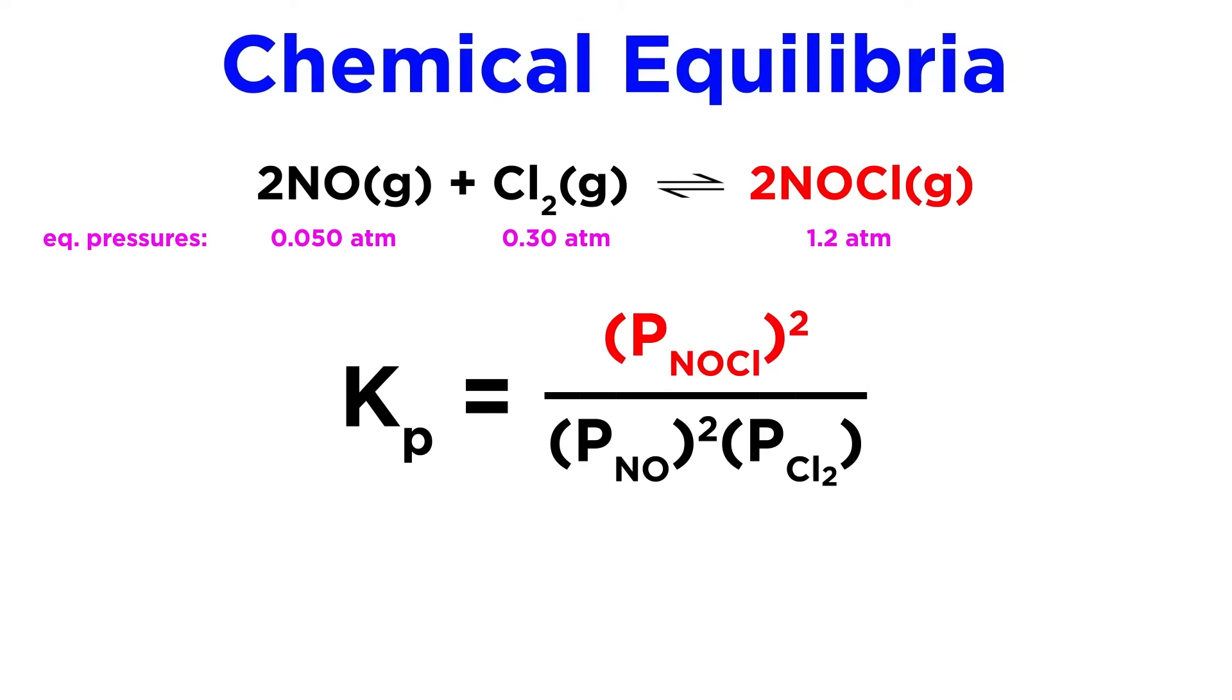Products go on top, so here that's the partial pressure of NOCl, and that will be squared because of this stoichiometric coefficient. Then on the bottom we find the reactants, so that's the partial pressure of NO which will be squared, times the partial pressure of Cl2. This is our expression.